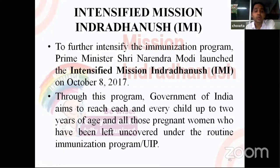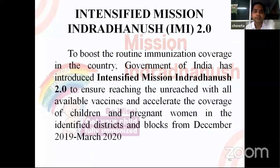Intensified Mission Indradhanush was launched by Prime Minister Narendra Modi on October 8, 2017. Through this program, the Government of India aims to reach each and every child up to two years of age and all pregnant women who have been left uncovered under the routine immunization program. Intensified Mission Indradhanush 2.0 was introduced to boost routine immunization coverage, ensuring that unreached populations receive all available vaccines, accelerating coverage in identified districts and blocks from December 2019 to March 2020.